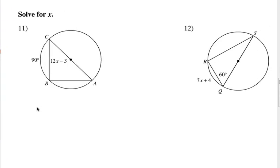In number 11, we want you to solve for X, and it's a little unclear in the diagram, but let me help you out. It's 12X minus 3 is the measure of this angle right here, and this arc CB is 90 from C to B. So, we're looking at the diagram, figuring it out, and solving for X. In number 12, obviously, you want to know what X is if this arc from R to Q is 7X plus 4, and this angle right here is 60 degrees. Pause the video, try it, good luck.